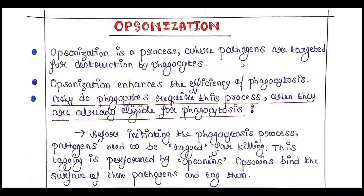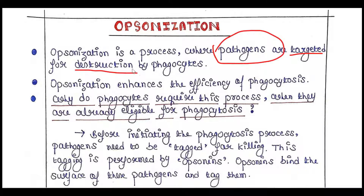In this process, the pathogens that have attacked our body are targeted for destruction, and this destruction will be done by phagocytes. Phagocytes are cells that can undergo phagocytosis.